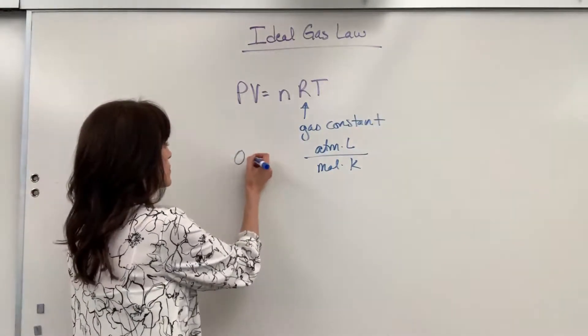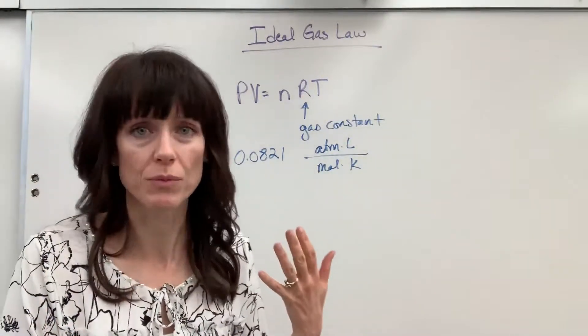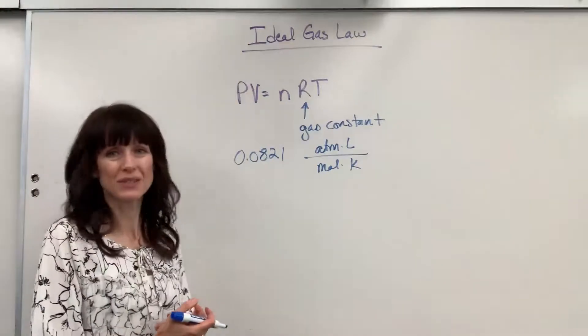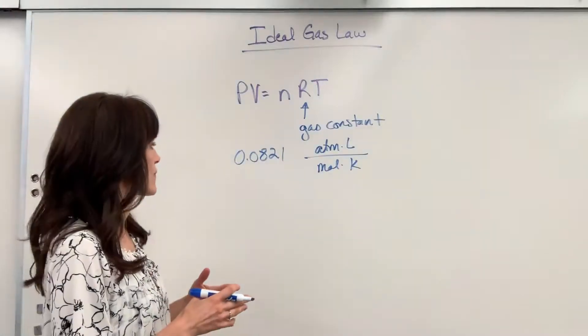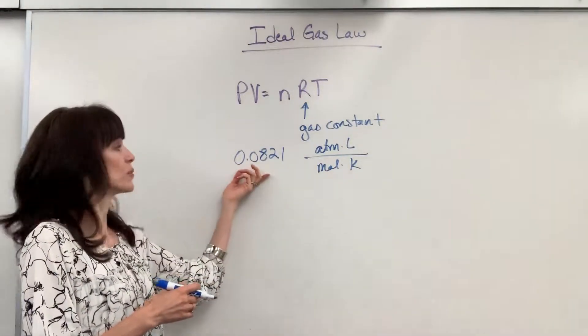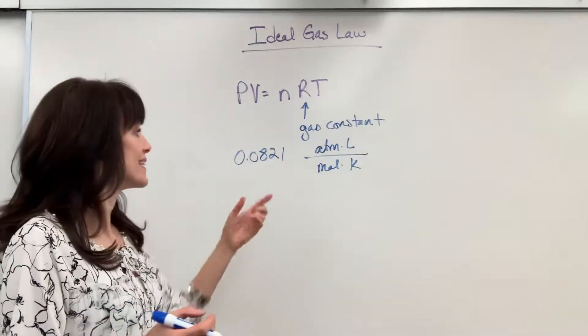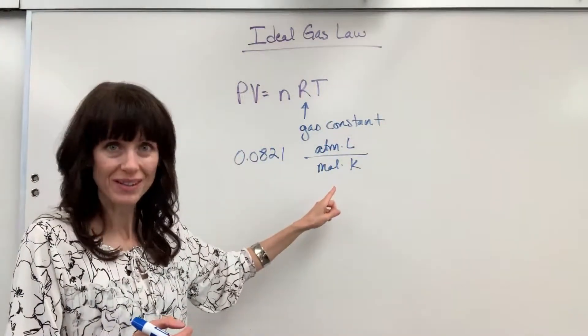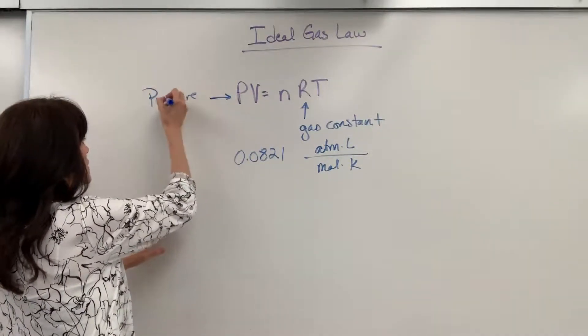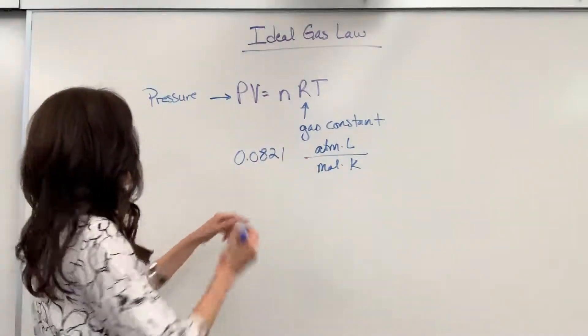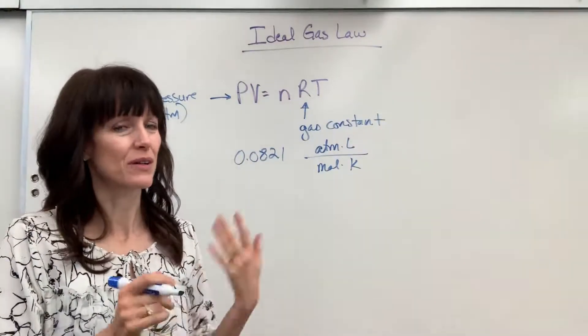Now, the value of this is 0.0821. And if you look up on a chart, you could even go a couple more decimal places. For this, I'm going to use the three sig figs for a general level class. 0.0821 ATM times liter divided by mole times Kelvin. So let's label everything else, and we will attach the appropriate unit to that variable. So P is going to be pressure, and based on our gas constant, pressure has to be in ATM. We have to have that in ATM. So if it's millimeters of mercury, you're converting it to ATM.